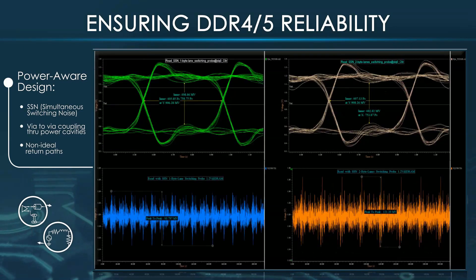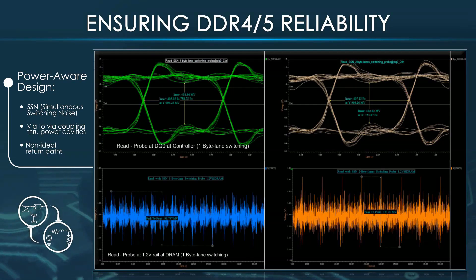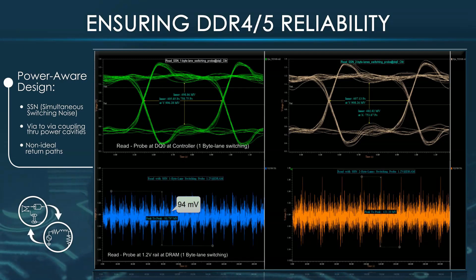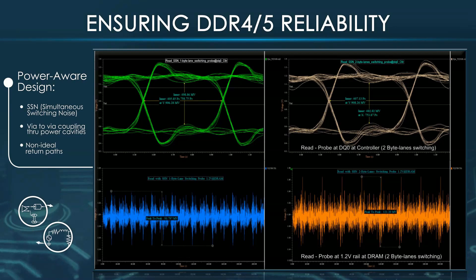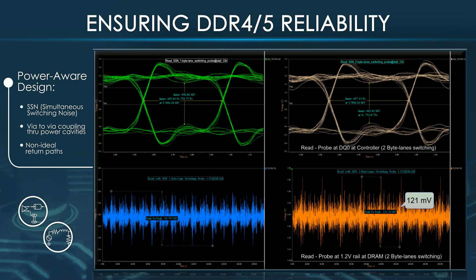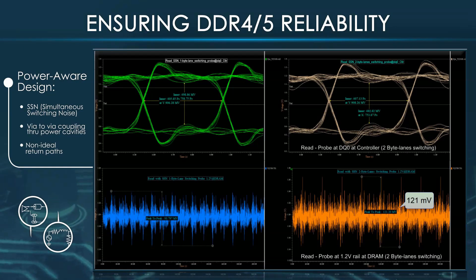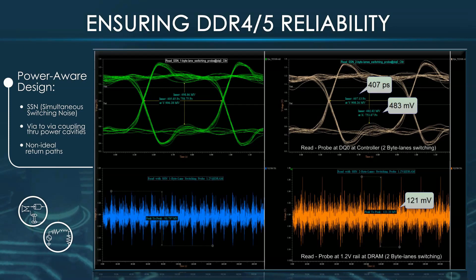Now let's look at the data read results. The results on the left are while 1-byte lane is switching: peak-to-peak noise is about 94 mV, eye height at the controller is around 500 mV, and eye width is around 406 picoseconds. The peak-to-peak noise on the 1.2-volt rail at the DRAM while 2-byte lanes were switching is about 121 mV — a slight increase from 94 mV. The eye height at the controller when 2-byte lanes were switching is around 483 mV and eye width is around 407 picoseconds. The eye width was not affected, but the eye height decreased slightly.